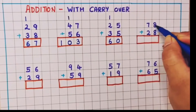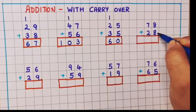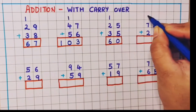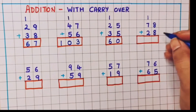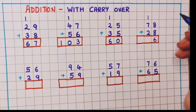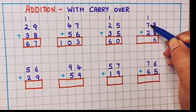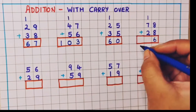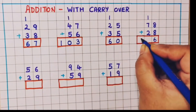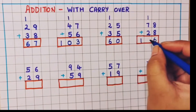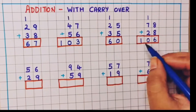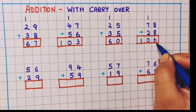Now 78 plus 28. 8 plus 8 gives the answer 16, so 1 will go as a carry over to the tens place. Now 1 plus 7 is 8 and 8 plus 2 is 10. So here I will write 1 in the hundreds place and 0 in the tens place. So the answer is 106.